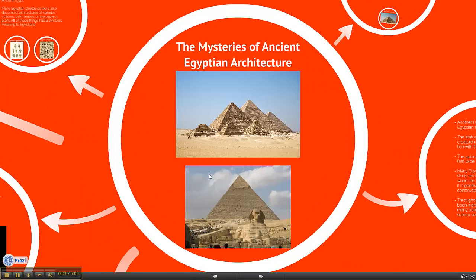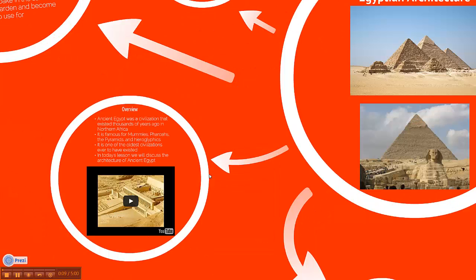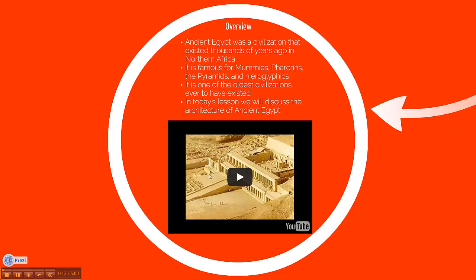Hello boys and girls, welcome to today's lesson about the mysteries of ancient Egyptian architecture. Ancient Egypt was a civilization that existed thousands of years ago in northern Africa. It is famous for mummies, pharaohs, the pyramids, and hieroglyphics. It is one of the oldest civilizations ever to have existed. In today's lesson, we will discuss the architecture of ancient Egypt.